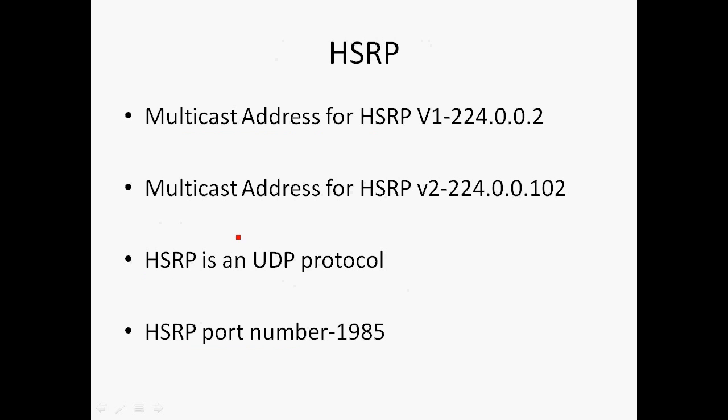The multicast address for HSRP: there are two versions — version 1 and version 2. If HSRP version 1 is configured, all HSRP routers communicate using multicast address 224.0.0.2.